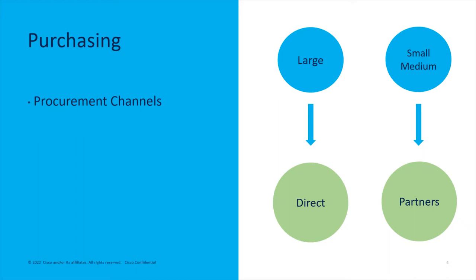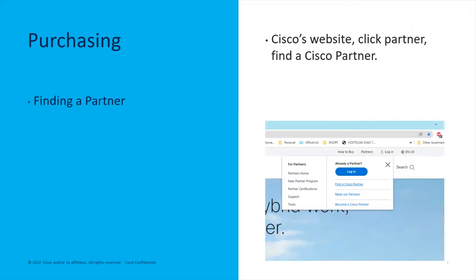If you're a large customer, you have a direct relationship. If you're a medium or small customer, then you typically work through what we call partners or resellers. You talk to them and their engineers will help you build and craft the designs you need. So if you're not a direct large-relationship customer, you want to figure out how to find a partner.